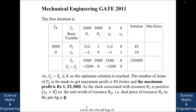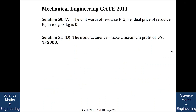The slack s2 = 10 > 0, meaning resource R2 is in excess. Therefore the dual price of R2 is 0. The manufacturer's maximum profit is ₹1,35,000.